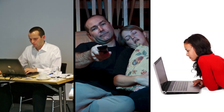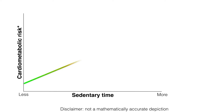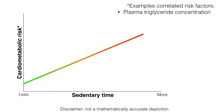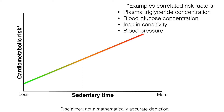The bulk of current research suggests that as sedentary time goes up, so does cardiometabolic risk — the risk of cardiovascular diseases such as heart attacks and stroke, and metabolic diseases such as type 2 diabetes. Specific examples include plasma triglyceride concentration, blood glucose concentration, insulin sensitivity, blood pressure, total cholesterol, waist circumference, and obesity. These associations have been shown for children, adolescents, adults, and more senior people.